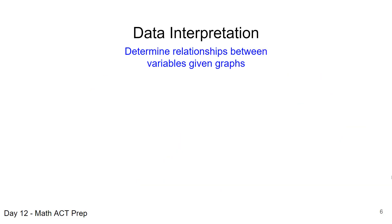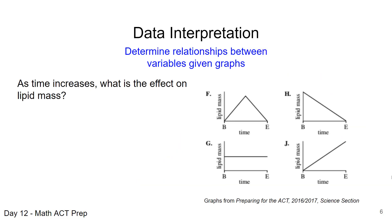Sometimes we have to look at different relationships between variables given in a graph. This example actually comes from a science section, but we're seeing more of these types of questions even on the math. It may vary in subject matter — in this case it's talking about time and lipid mass, as shown by the labels on the chart. The question says: as time increases, what is the effect on lipid mass? Lipid mass is represented on the y-axis and time is on the x-axis.